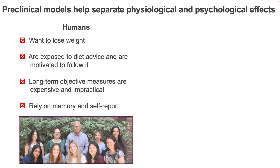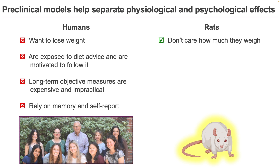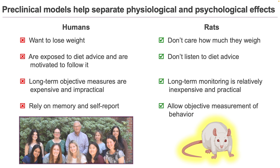And that's where preclinical models such as rats come in. Unlike people, rats don't care how much they weigh or what they look like, they don't need dieting advice, and it's relatively easy to monitor what and how they eat. So they're excellent subjects for studying eating behavior in the absence of these psychological factors.